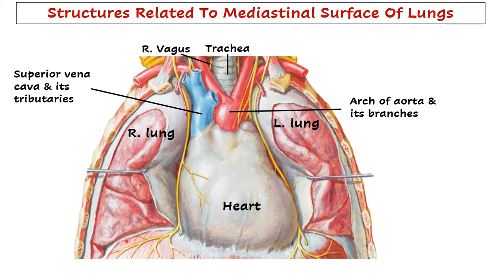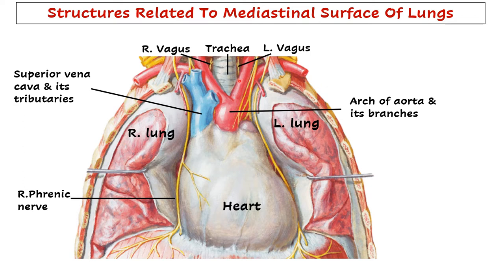Then we have two important nerves passing from the neck to the diaphragm through the mediastinum. These two nerves are the right vagus and the right phrenic nerve. The phrenic nerve is going in front of the hilum of the lung whereas the vagus is more posteriorly placed. Similarly, on the left side we will have the left vagus and the left phrenic nerve. These are the structures which will be related to the mediastinal surface of lungs.